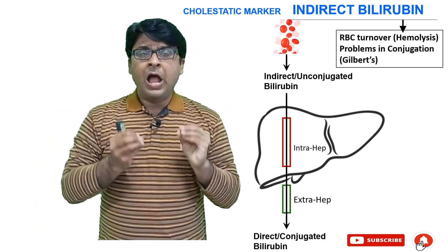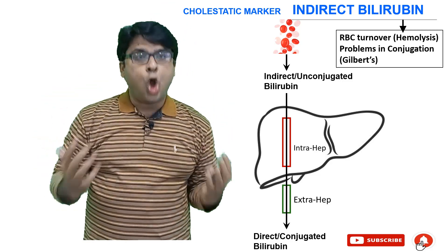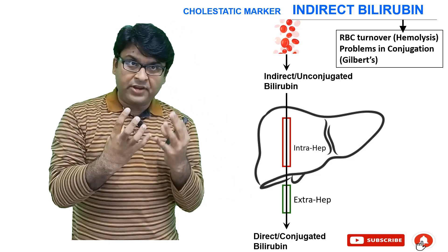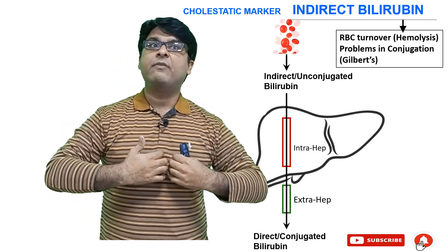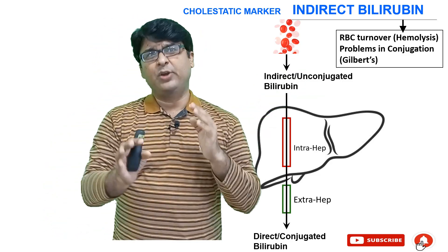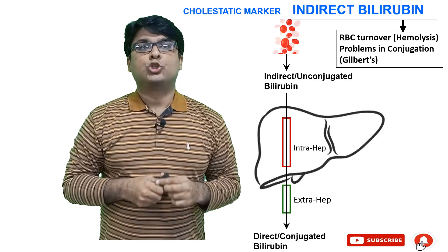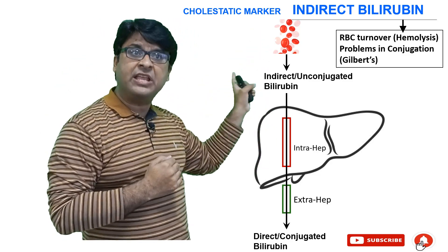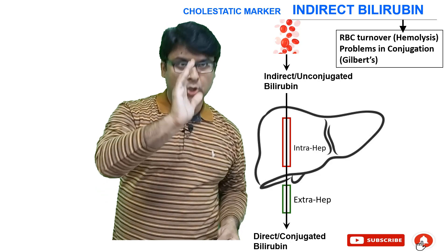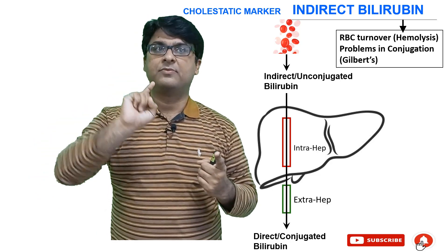Another cause of elevated indirect bilirubin: even if RBCs are destroyed normally, if the liver's conjugation machinery is not working, bilirubin will never be conjugated — or only to a very low level. For example, there's a disease called Gilbert's disease, which is very common — three to five percent of the population has it. In Gilbert's disease, the enzymatic machinery is defective. When indirect bilirubin comes into the liver, it is not conjugated, so indirect bilirubin levels go high.